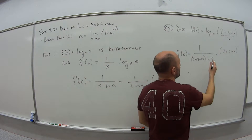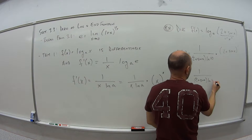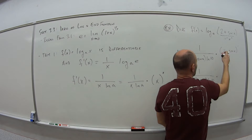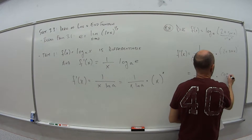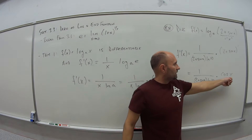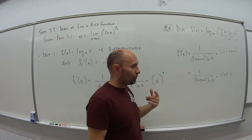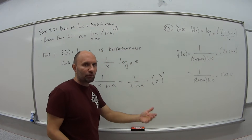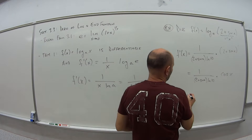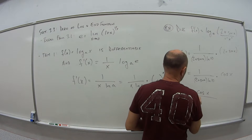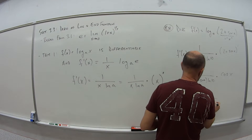Taking that derivative: this becomes 1 over 2 plus sine of x times natural log of 10, times — the derivative of 2 is 0 since it's a constant, and the derivative of sine is cosine of x. And if this had been 3x instead, you'd have to apply the chain rule again. Keep applying the chain rule until you get down to just x. Simplifying, the final answer is cosine of x over 2 plus sine of x times natural log of 10.